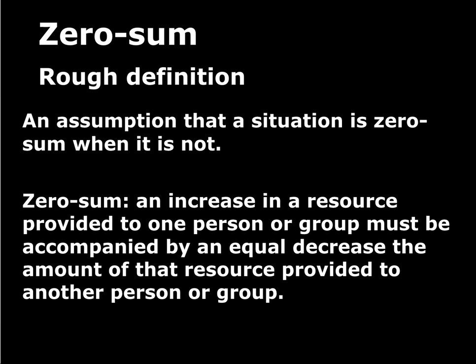Let's move on to the next bias: the zero-sum bias. The rough definition is that it's the assumption that a situation is zero-sum when it's not. A zero-sum situation is one in which an increase in a resource provided to one person or group has to be accompanied by an equal decrease in the amount of that resource provided to some other person or group. The resource can be money, prestige, opportunities, and so on — and in a zero-sum situation, there's a fixed amount of it.